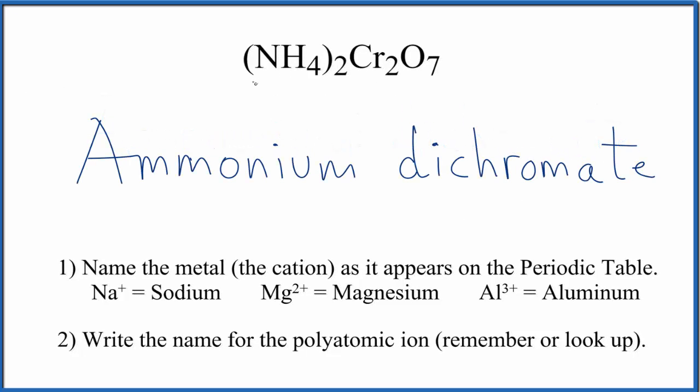So this is the name for NH42Cr2O7. You'll note that on the dichromate ion here, the whole thing has a 2- charge, and the ammonium ion here, the whole thing is 1+. So you can see we need two of them to have the 2+, balance out the 2-.